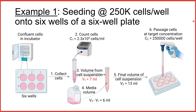This is the problem solved and the corresponding volumes depicted in the schematic. As shown, V1 here is 7 milliliters. The media volume was V2 minus V1, that is 6 milliliters. The final volume prepared for cell seeding is 13 milliliters. By adding 2 milliliters of this final suspension to each well, we are seeding them at 250,000 cells per well.